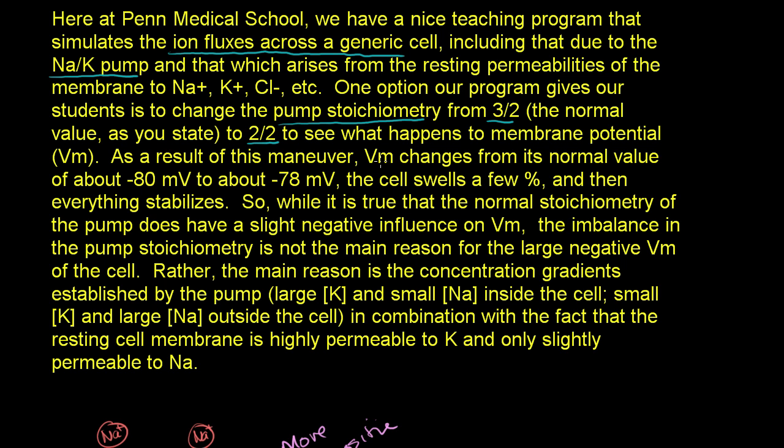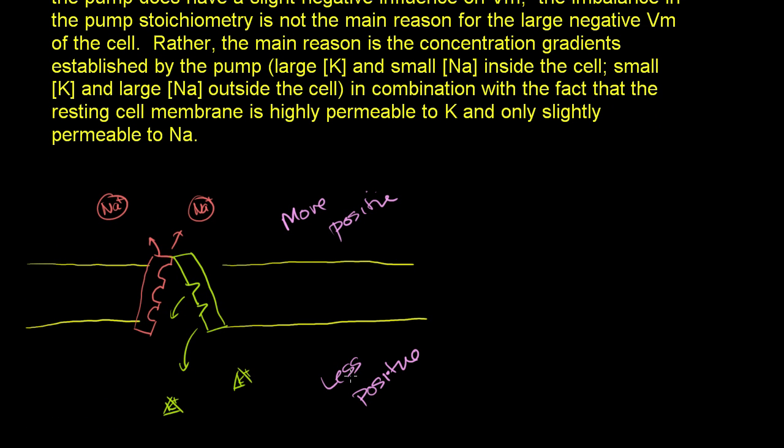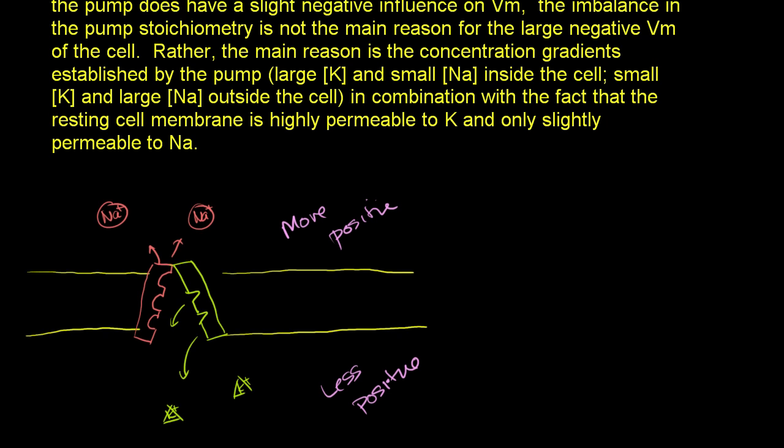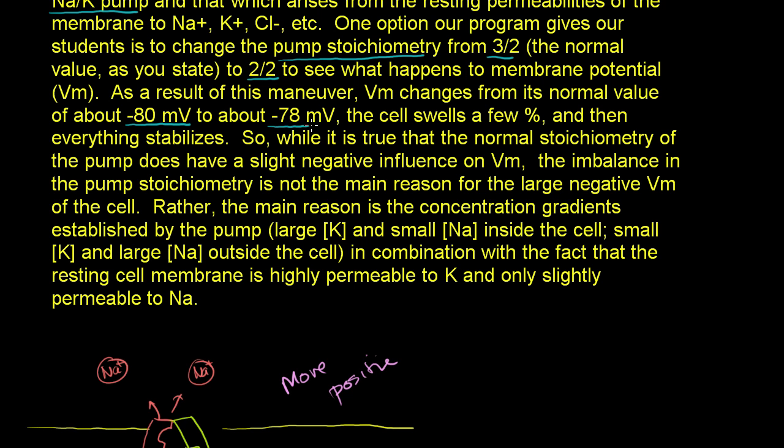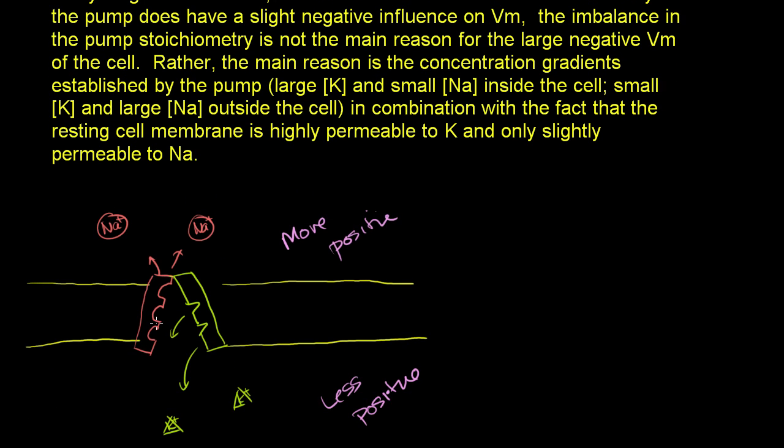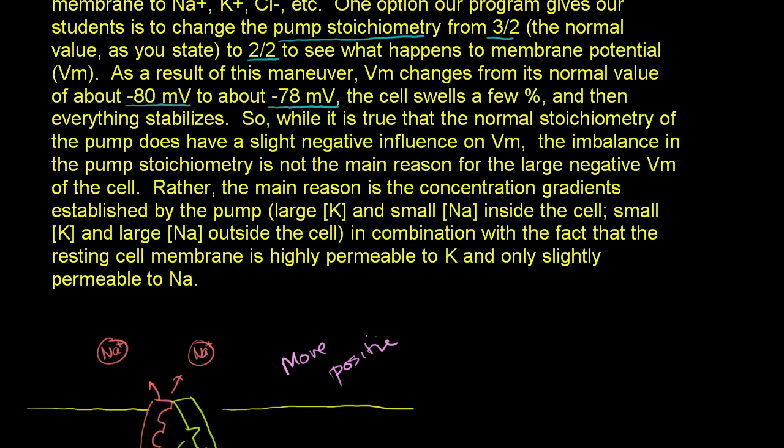As a result of this maneuver, the membrane potential changes from its normal value of about -80 mV to about -78 mV. So what he's saying is if you change this from 3 and 2 to 2 to 2, it actually doesn't change the potential that much. You still have a more positive environment outside than you have inside. So that leads to the question, then why do we have the potential if the stoichiometry of this ratio is not the main cause?